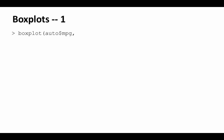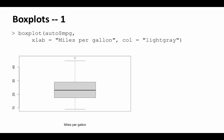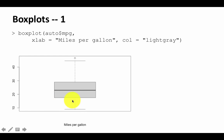Now let's look at box plots. You can do boxplot(variable, xlab=..., col=...) and get a box plot. In a box plot, the box represents the interquartile range: the bottom is the 25th percentile, the middle line is the median, and the top is the 75th percentile. The bulk of the data — from the 25th to 75th percentile — lies in a very narrow band around the median, even though the full range goes from about 10 to 50.